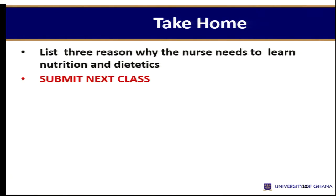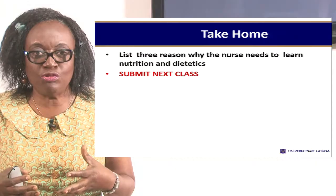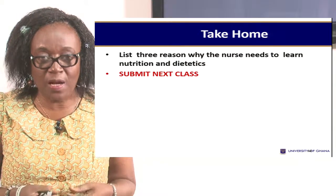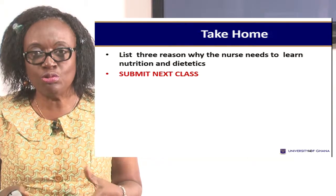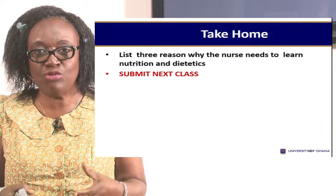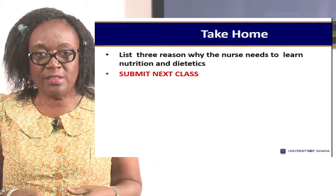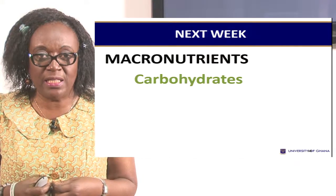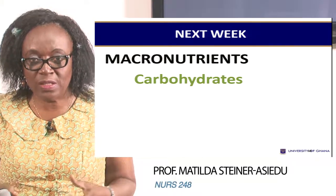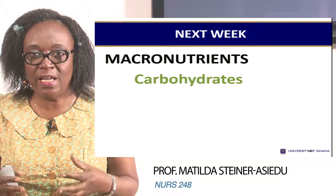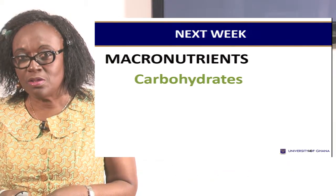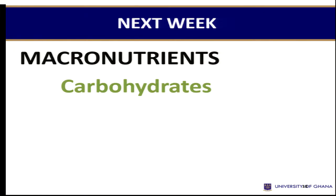Our take-home message today is: we should be able to list reasons why the nurse needs to learn and understand nutrition and dietetics — it is very important. From what I have discussed so far, I am sure you'll be able to list some and explain why, as a nurse, you need to understand nutrition and dietetics. Next week, I'll be talking about macronutrients — which is our first nutrient that I listed — carbohydrates. We eat first and foremost to satisfy energy needs, and our energy foods come from carbohydrates. Read your readings before you come in next week.